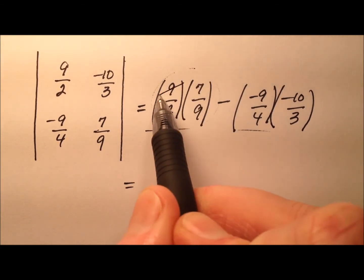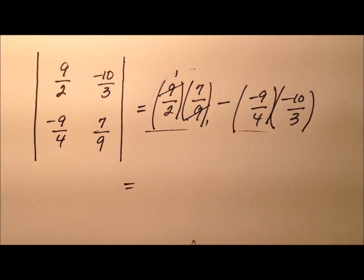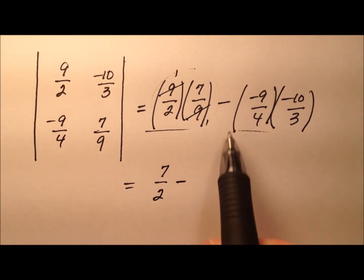So, for this first multiplication, it looks like these 9s will actually cancel and leave us with just 7 halves. Okay, and then we'll be subtracting.